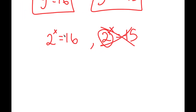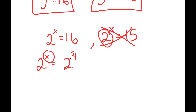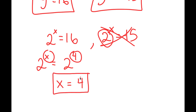So now all I'm left with is 2 to the power of x is equal to 16. And to solve this, I'm going to rewrite 16 as 2 to the power of 4. Meaning these two exponents are equal to each other, and x is equal to 4. So this is my solution to this problem.